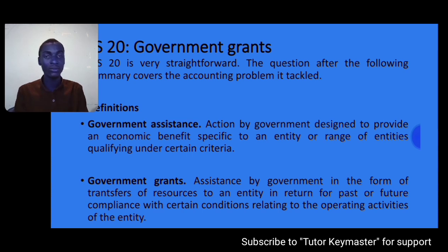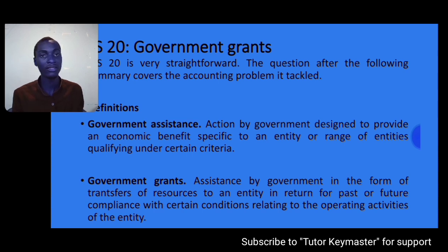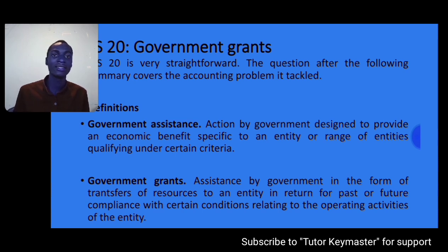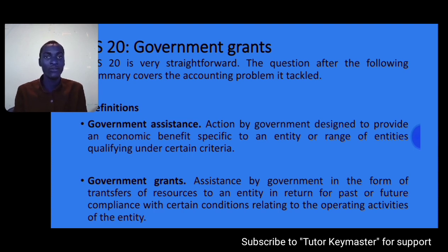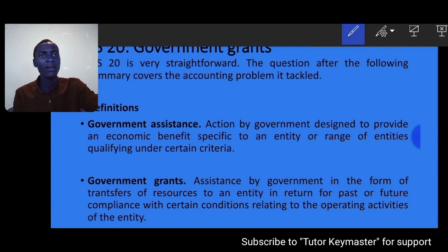We know that in many countries the government provides financial assistance to different industries. The most common form is a grant of cash from the local or national government. Such grants are defined by IAS 20 as either government grants related to assets or government grants related to income. We will look at government assistance, government grants, their different forms, accounting treatment, and disclosure requirements.